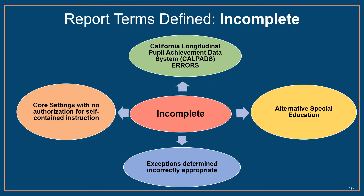An assignment monitoring outcome of INCOMPLETE indicates that missing or incorrect information about the assignment was reported to CALPADS by the LEA, which prevented a complete and accurate determination of the assignment authorization during the CTC assignment monitoring process. Determinations in CALSAS that would receive an incomplete status include CALPADS errors that triggered exceptions, alternative special education placements — for example, when a special education student is placed in a general education classroom on the basis of their individualized education plan — exceptions for educators that have been determined as appropriate assignments but whose credential authorizations aren't associated with the setting or content of the course, and course setting assignments that are determined exceptions because an educator does not hold a credential that authorizes self-contained instruction.